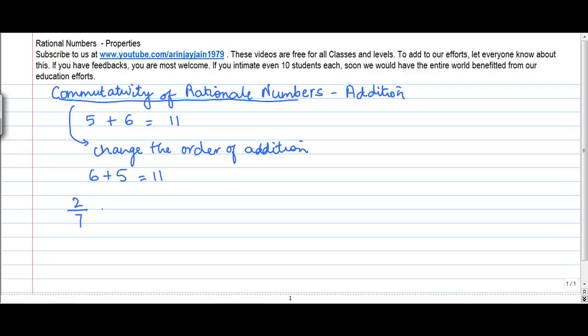Let's have 2 upon 7 plus minus 3 upon 11, the number which I have used in the previous videos also. So I take the least common multiple of these two numbers, I get 77. 77 goes into 7 eleven times, so 11 times 2 gives me 22 plus 11 goes into 77, 7 times, 7 minus 3. This gives me 22 minus 21 divided by 77 or 1 by 77.